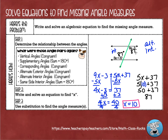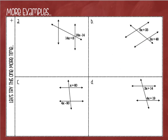Let's continue on to the next example. I want to look at these two angles and determine their relationship. These are vertical angles, and we know that vertical angles are equal to each other. So when I write my equation I'm going to set it up as 16x minus 14 is equal to 14x plus 8.